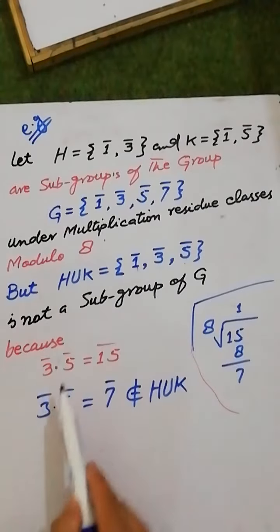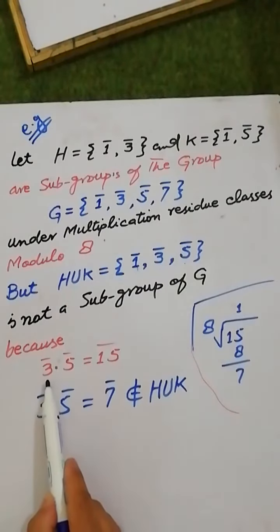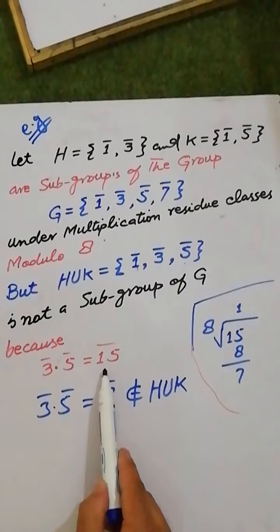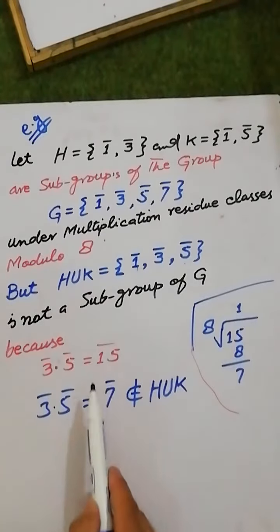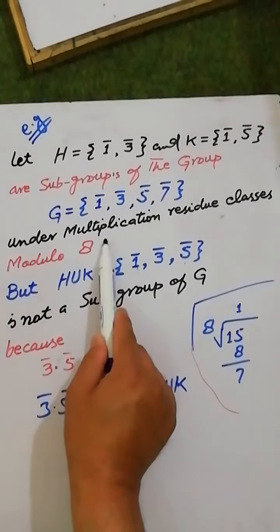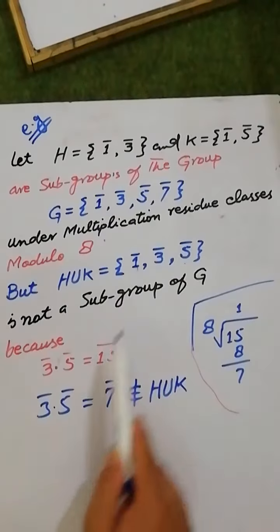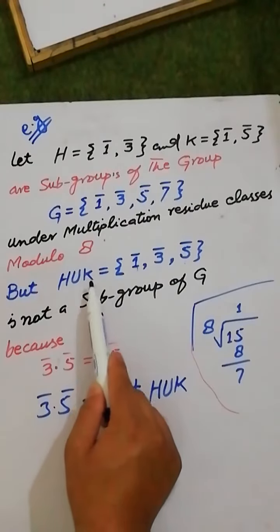under the multiplication, 3 multiplied by 5 equals 15. Since 15 is greater than 8, the multiplication of these two elements from H union K